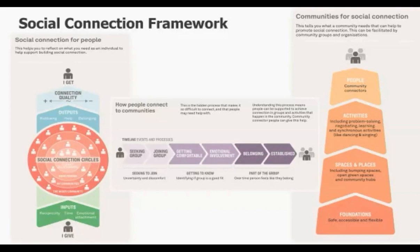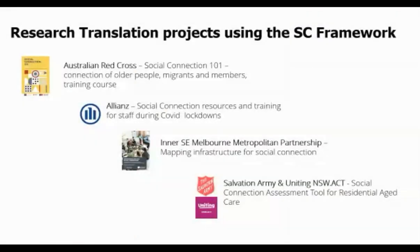We have used this framework as the basis for partnering and co-designing multiple tools and initiatives. As well as the work done with Australian Red Cross, including a training course, we did work with Alliance during the lockdowns to make resources and training for staff working only online. We also did a project with Inner Southeast Melbourne Metro Partnership Councils to map social connection infrastructure on top of demographics about at-risk groups to show where the gaps were. Most recently, we've been working with the Salvation Army and Uniting to make a social connection assessment tool for residential aged care.